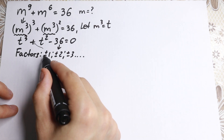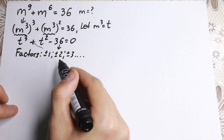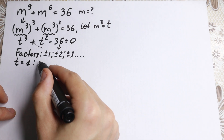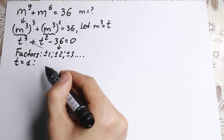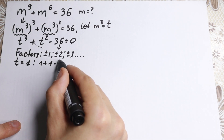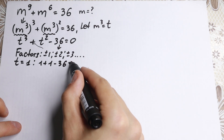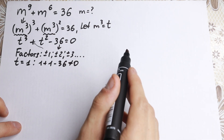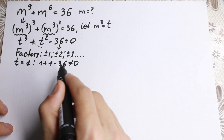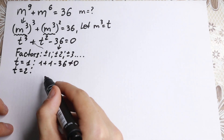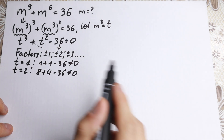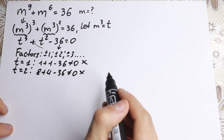Let's start with ±1 and ±2. If t = 1: 1 + 1 − 36 is not equal to 0. For t = −1: −1 + 1 is also not equal to 0. If t = 2: 8 + 4 − 36 is not equal to 0. So we reject these.